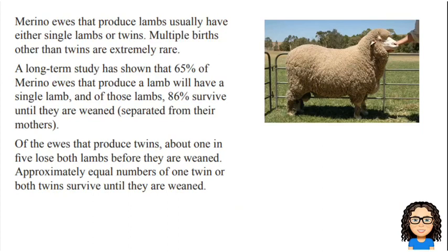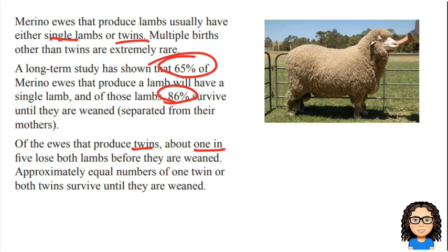Here is our question. This one's talking about ewes producing lambs — either they have a single lamb or they have twins. Multiple births other than twins are extremely rare. They've told us 65% of merino ewes will produce a single lamb, and of those lambs, 86% survive until they're weaned. Then from those that produce twins, about 1 in 5 lose both lambs, and equal numbers of one twin or both twins survive until they are weaned.